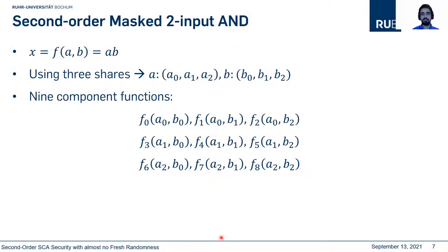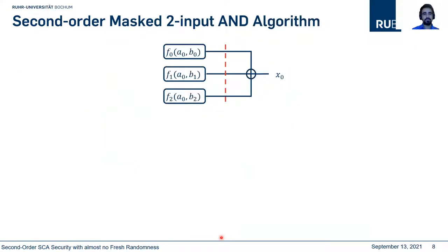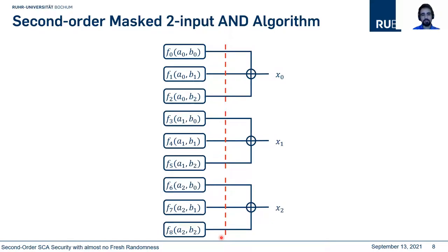Let's start with a simple two-input AND gate. We would like to have a second-order realization of a two-input AND gate with two shares, which forces us to use non-complete component functions to achieve second-order non-completeness. The construction has nine component functions, a register layer, and a compression layer. We want an algorithm to find a uniform sharing where X1, X0, and X2 should be uniform and the entire design should be glitch-extended probing secure.